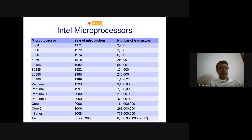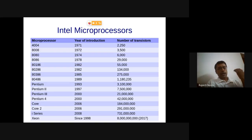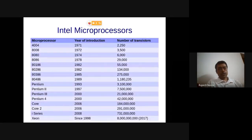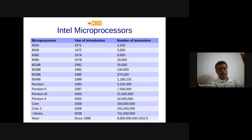Since we are talking about x86 Intel microprocessors, you might be aware of this from your Computer Architecture course. It started in 1971 with the 4004 microprocessor, which was a 4-bit processor. Then it became 8-bit in 1972. The rightmost column shows the number of transistors used — which looks funny now, but at that time these were really path-breaking ideas, and a lot of interesting research went into building microprocessors.